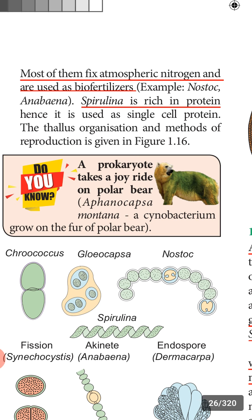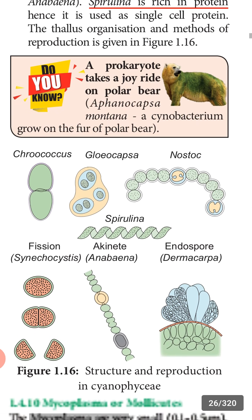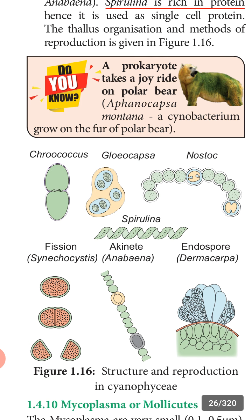Spirulina is rich in protein and hence is used as single cell protein for nutritional purposes. In the thallus organization diagram we can see the structures already studied. Akinete formation in Anabaena shows the thick-walled gray colored structure, and endospore formation shows spore formation taking place inside the plant body.